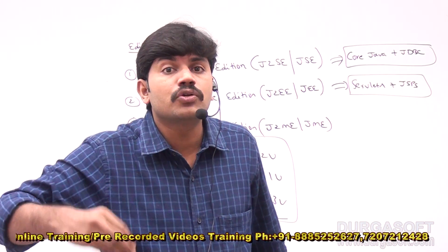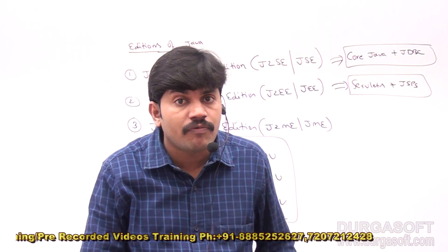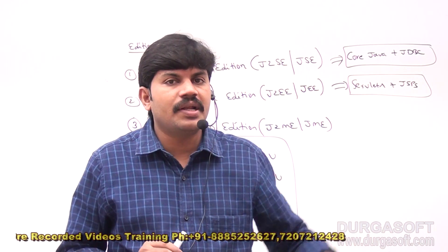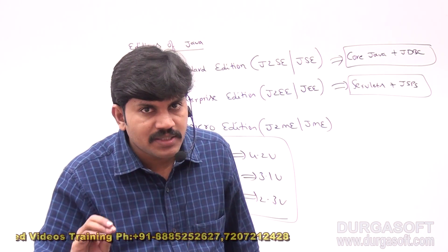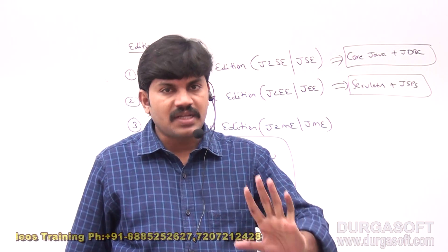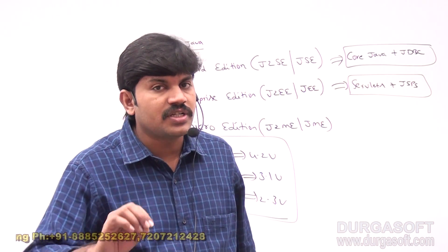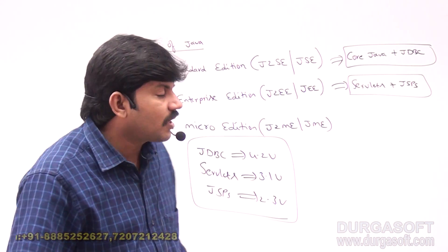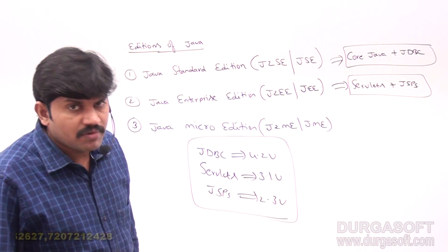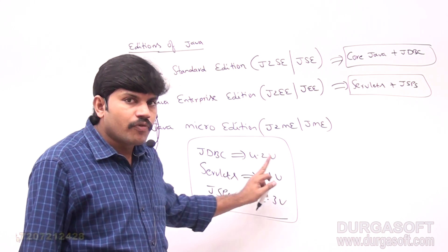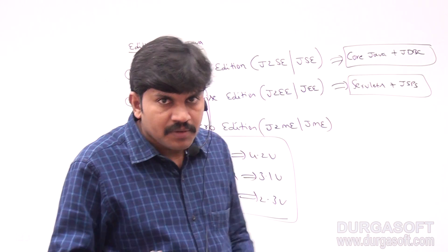To summarize: in web applications developed in Java, use JSP to display something to the end user, use Servlet for processing, and use JDBC to communicate with the database. According to Sun Microsystems, JDBC is part of Java Standard Edition while Servlets and JSP are part of Java Enterprise Edition. The versions we'll study are JDBC 4.2, Servlets 3.1, and JSP 2.3.